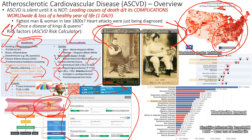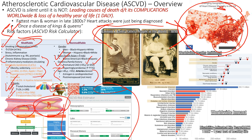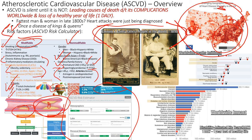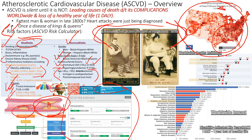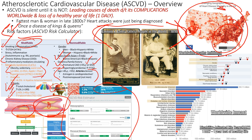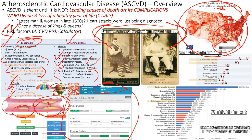Lipids — total cholesterol, LDL, HDL, and triglycerides — are all important. Dyslipidemia increases ASCVD risk and is largely modifiable unless genetic (e.g., familial hypertriglyceridemia). A poor diet raises LDL and lowers HDL. The liver is responsible for making more LDL or HDL, so diet management essentially tells the liver what to prioritize.